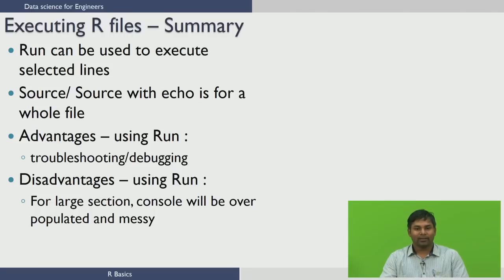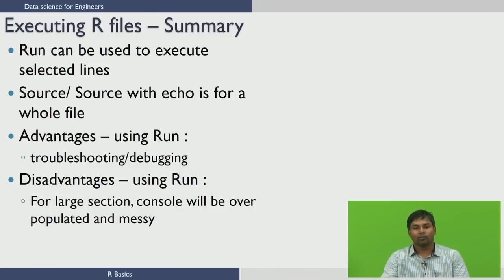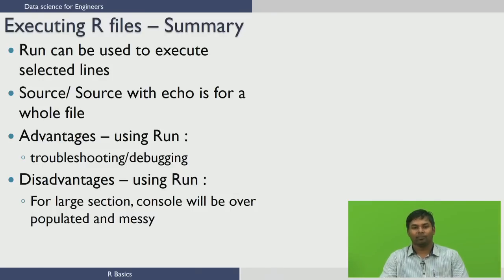In summary, run can be used to execute selected lines of R code, while source and source with echo can be used to run the whole file. The advantage of using run is that you can troubleshoot or debug the program when something is not behaving as expected. The disadvantage is that it populates the console and makes it messy. In the next lecture, we are going to see how to add comments to the R file for single lines and multiple lines. Thank you.